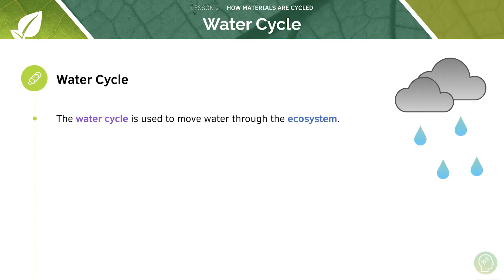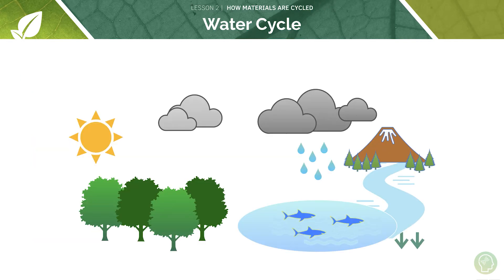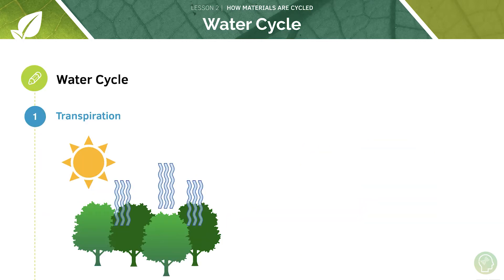So the water cycle is used to move water through the ecosystem. The water we drink is the same water that existed even in Jurassic times and it is cycled through the environment. And as it is a cycle we can begin at any point. Therefore we'll begin in the lakes, oceans and trees. So have a look at this diagram, it's going to make a lot more sense to you in a second.